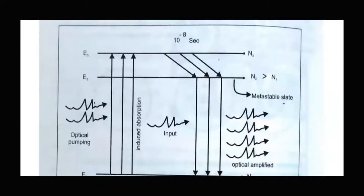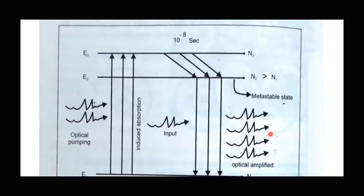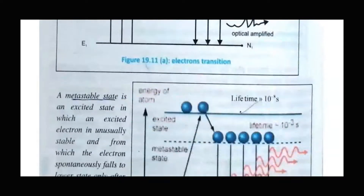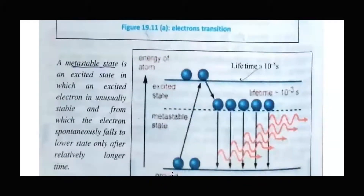To produce a laser, we need at least three energy levels. With only two energy levels, we cannot produce a laser. We need a middle energy level, which we call the metastable state. If we do not use a metastable state, we cannot produce a laser, because atoms in a regular excited state stay only for about 10 to the power of minus 8 seconds, which is very small.